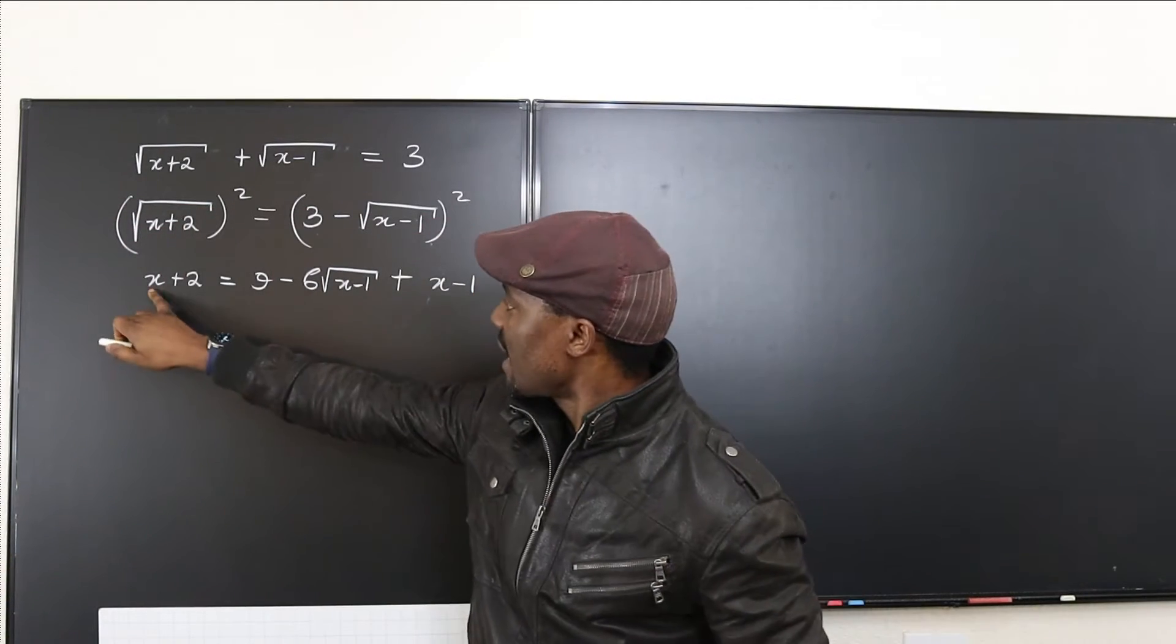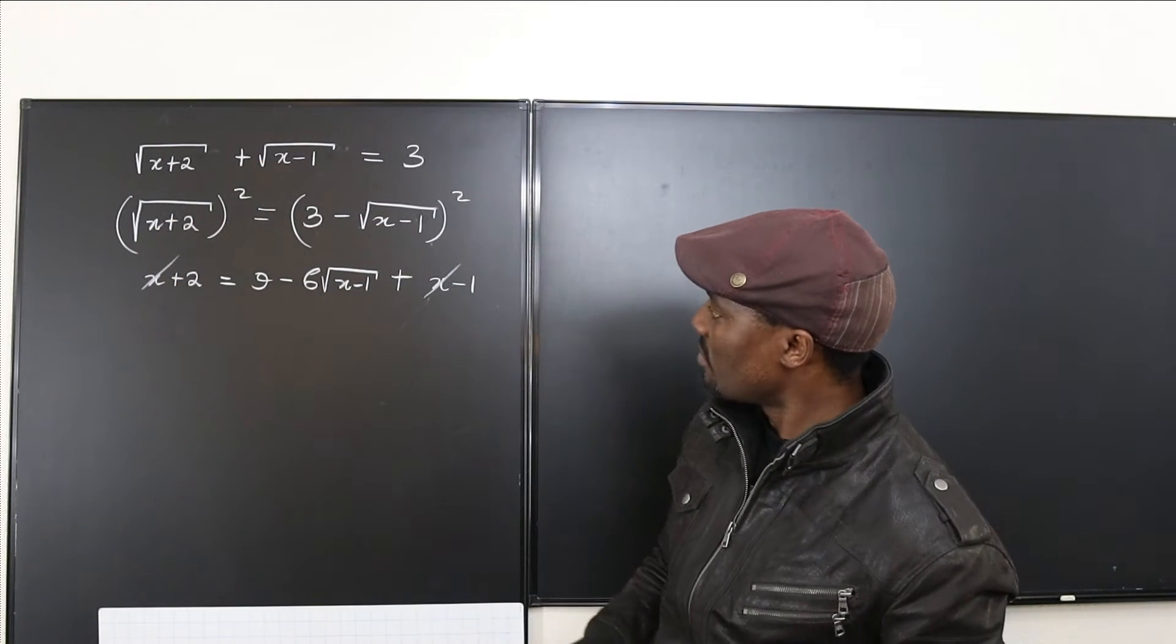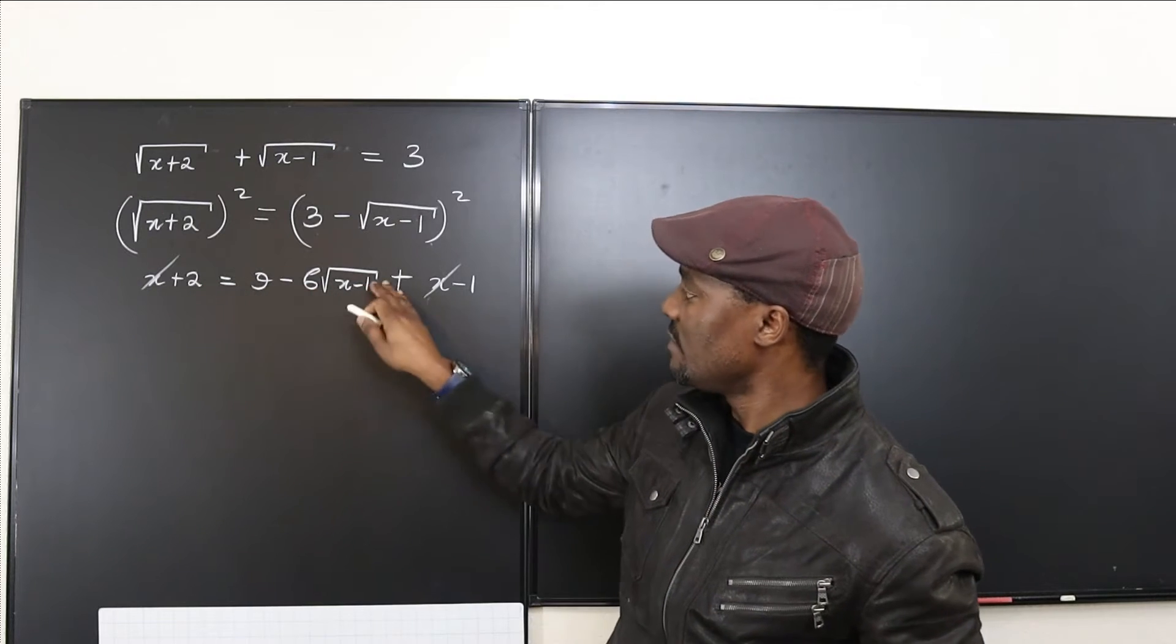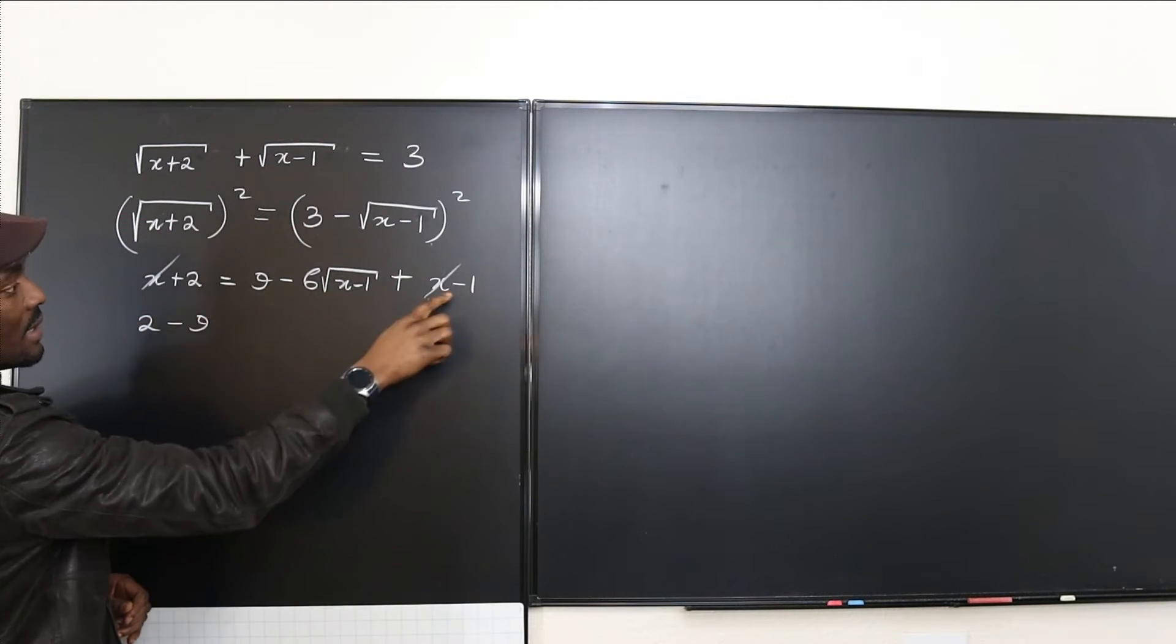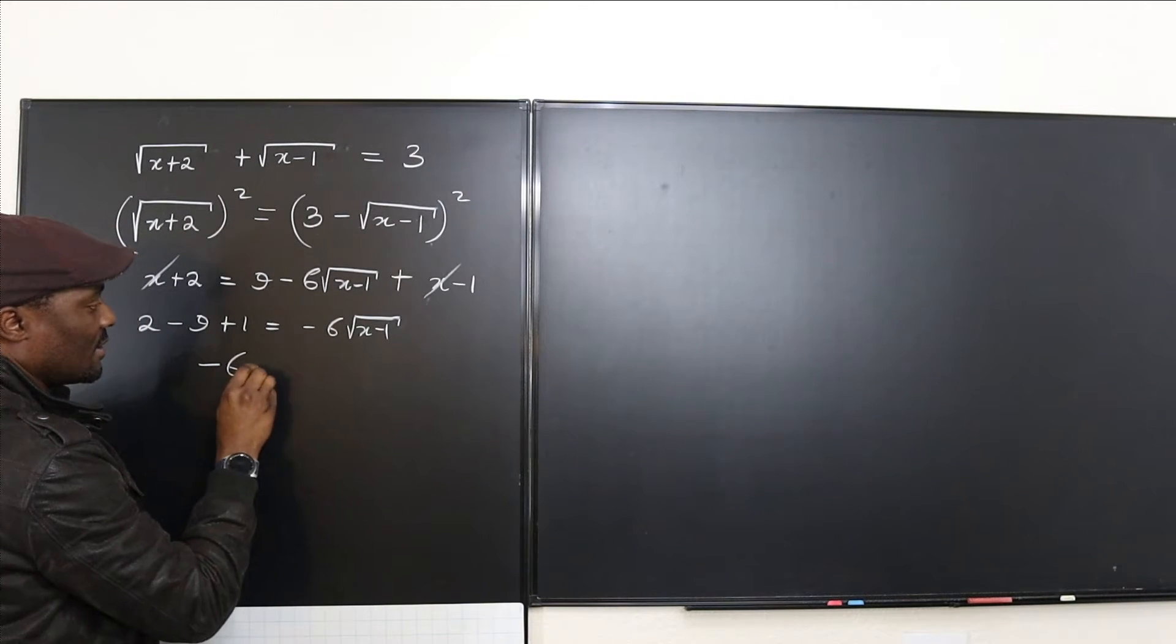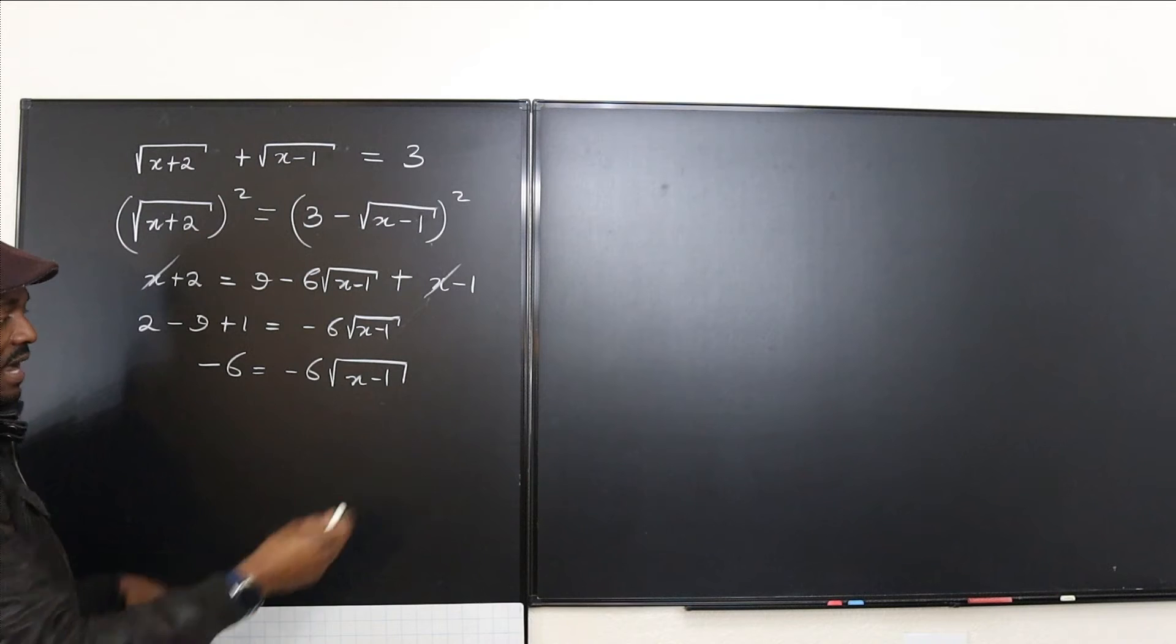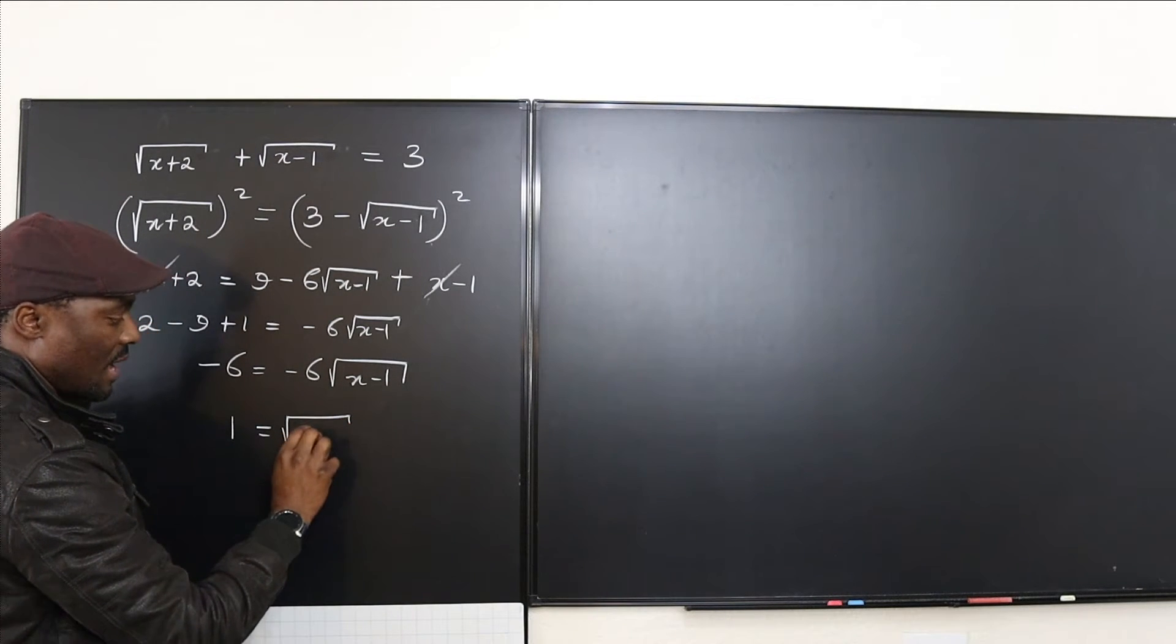Okay, now we can clean up all the x's. There's an x here, there's an x here. You can always take both of them out. And then we can take the numbers to the other side. So you have 2 minus 9 plus 1 equals negative 6 square root of x minus 1. So this is negative 6 equals negative 6 rad x minus 1. Divide both sides by negative 6. You're going to end up with 1 equals square root of x minus 1.